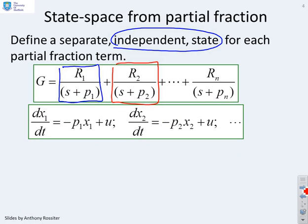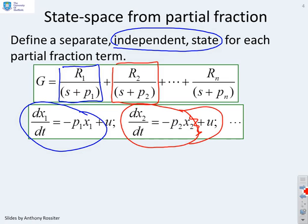So this is how we do it. A state space model for R1 over s plus P1 can start with the term dx1/dt equals minus P1 x1 plus u, and that will reproduce the pole s plus P1. A state space model which captures R2 over s plus P2 is given by dx2/dt equals minus P2 x2 plus u, and so on. So you'll notice I've got a separate first order ODE to represent each partial fraction.